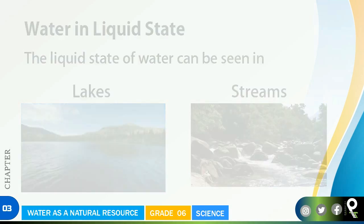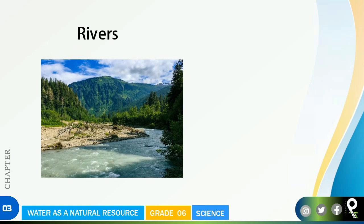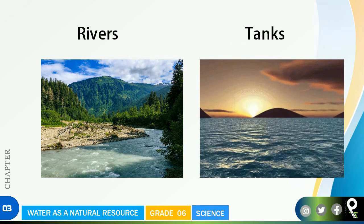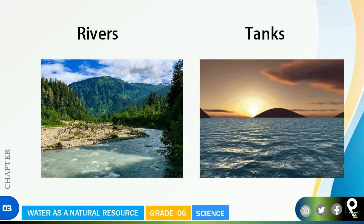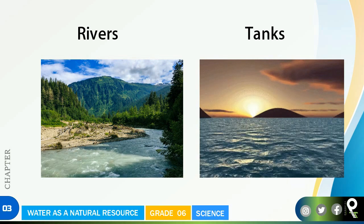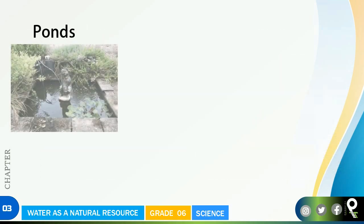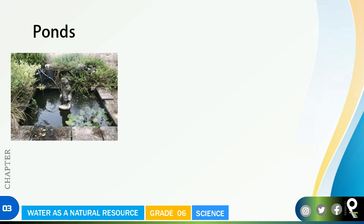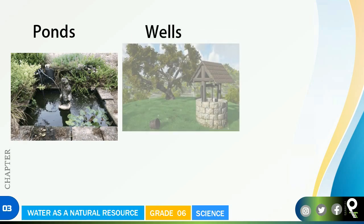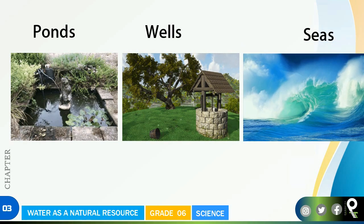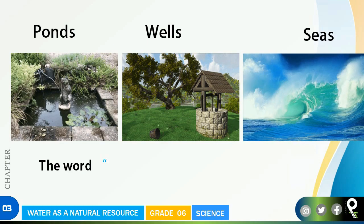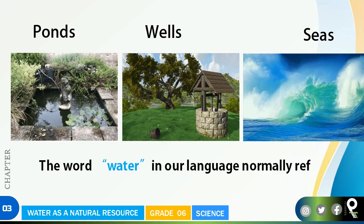You can find beautiful rivers where water is flowing. Tanks like Parakrama Samudraya or Minneriya — made by our proud Sri Lankan kings — are known as liquid water reservoirs. You can find ponds in Anuradhapura and Polonnaruwa, as well as wells in villages, and beautiful seas and oceans in our country too.